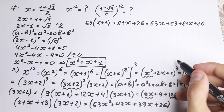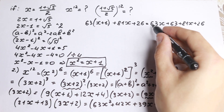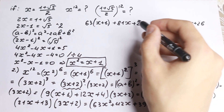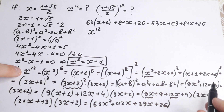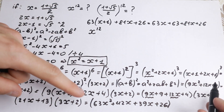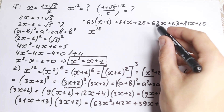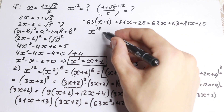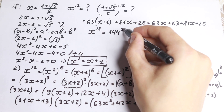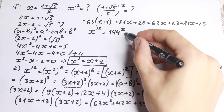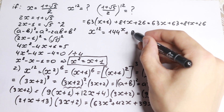Adding 63x plus 81x gives us 144x, and 63 plus 26 equals 89. So x to the 12th power equals 144x plus 89. Now we recall that x equals 1 plus square root of 5 over 2 from the beginning, so let's plug this in. x to the 12th power equals 144 times (1 plus square root of 5) over 2, plus 89.